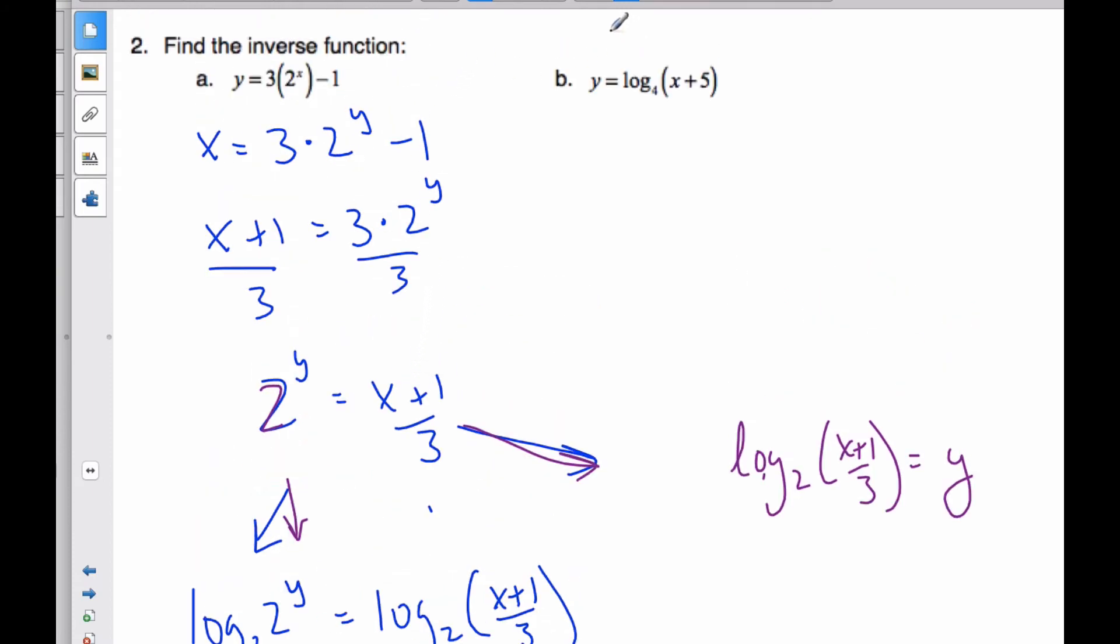Similarly, when I take a look at this one here, I know I'm going to switch my x and get x is equal to log base 4 y plus 5. I want to get rid of the logarithm so I can get the y here. I'm going to raise it to an exponential. And when I raise this side to the exponential, these are inverses, they cancel, so it's y plus 5 is 4 to the x.